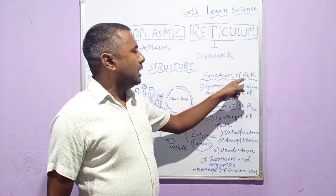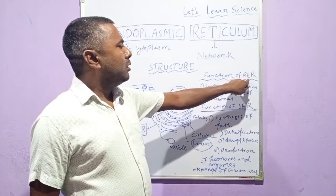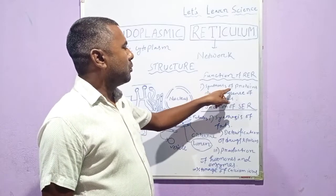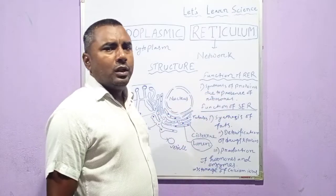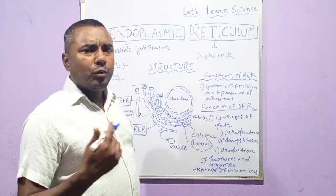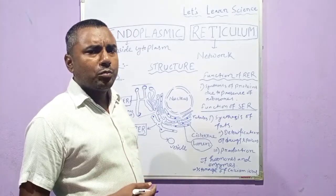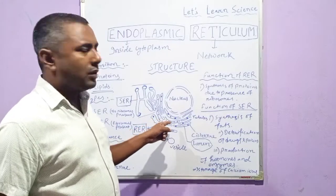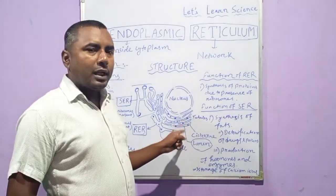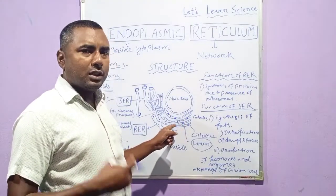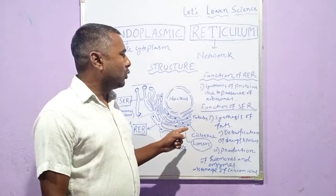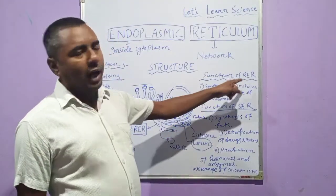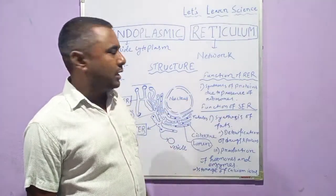The function of RER, that is Rough Endoplasmic Reticulum, is the synthesis of protein. It helps in the synthesis of protein because ribosomes are present on the surface of the Rough Endoplasmic Reticulum, and ribosomes are responsible for the synthesis of protein in the cell. So that is the main function of RER.